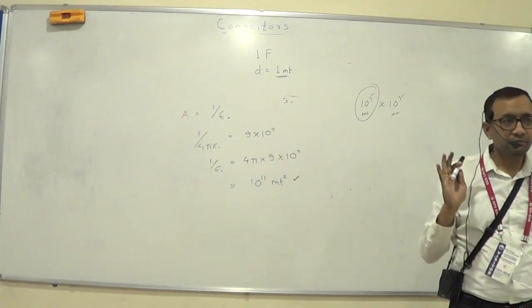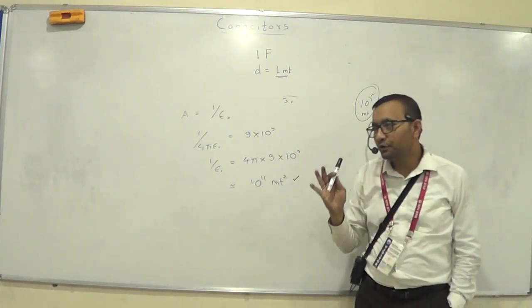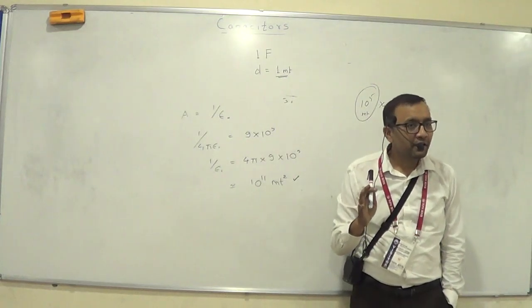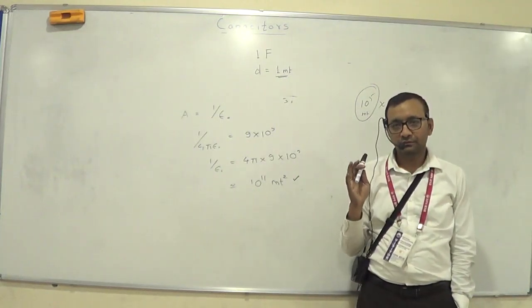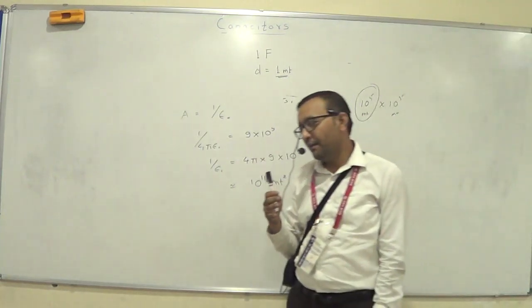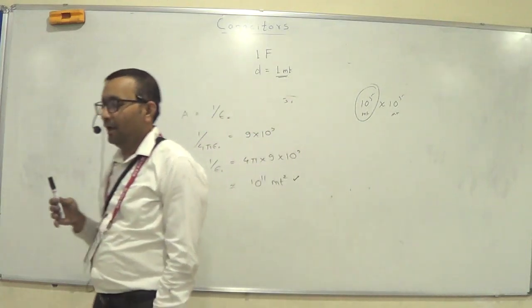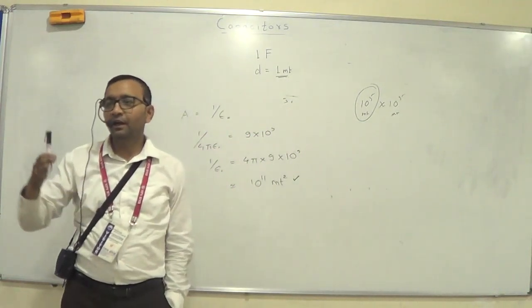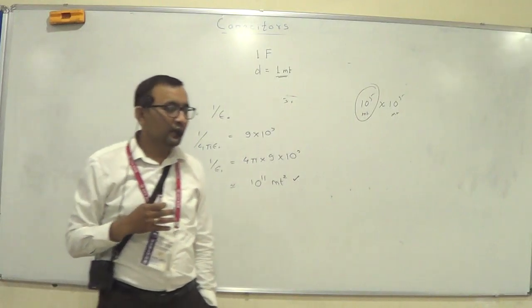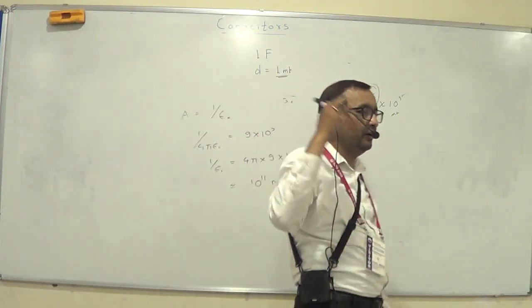1 farad is huge. Just like 1 coulomb is huge, similarly 1 farad unit is also huge. So whenever you have a numerical, you will have like nano farad, pico farad, micro farad. We will not have like 10 farad, 20 farad.